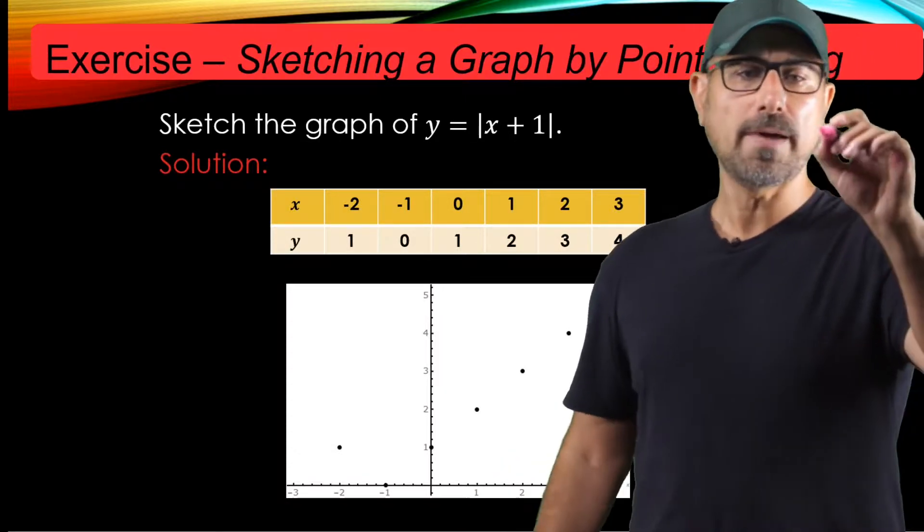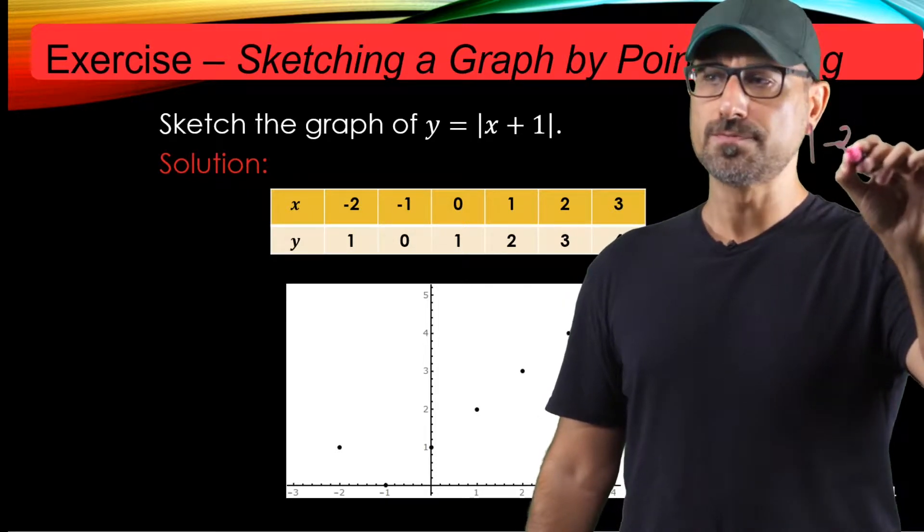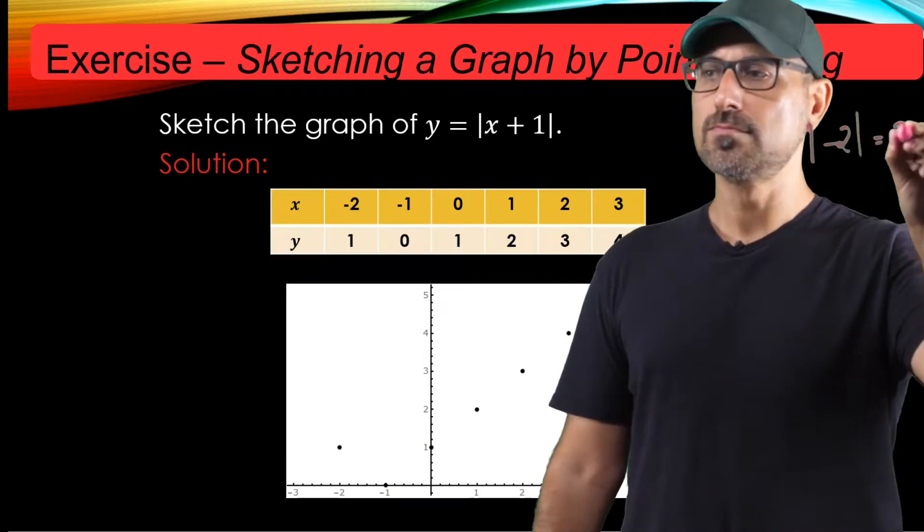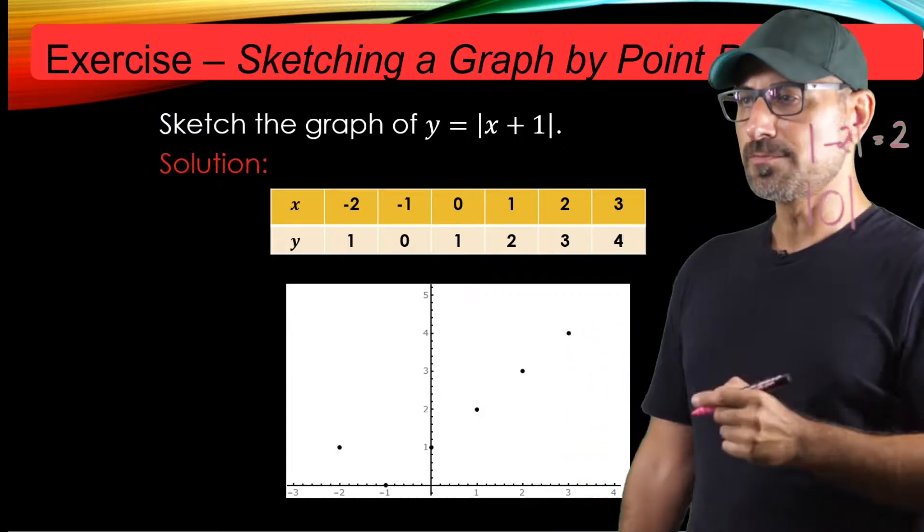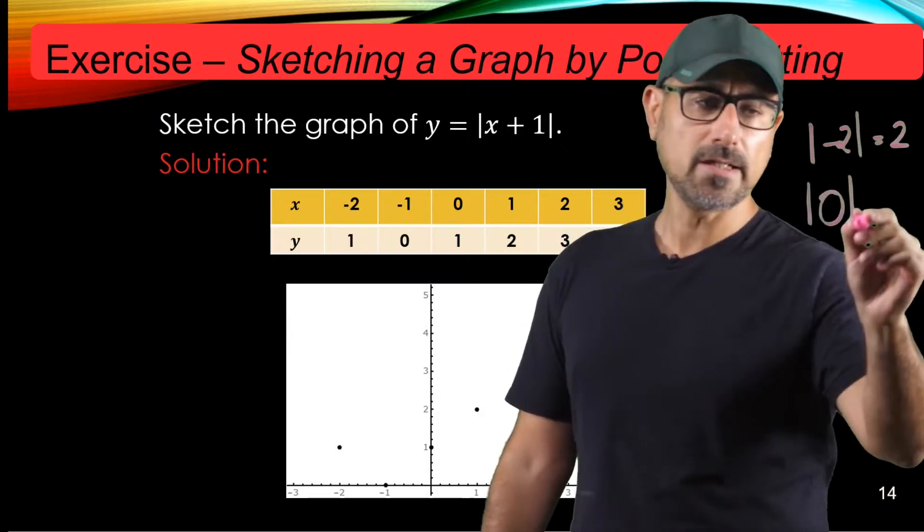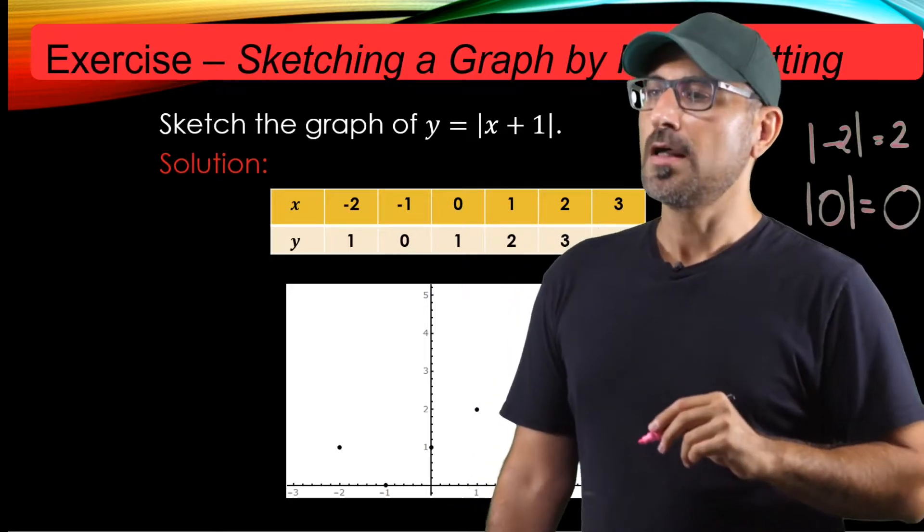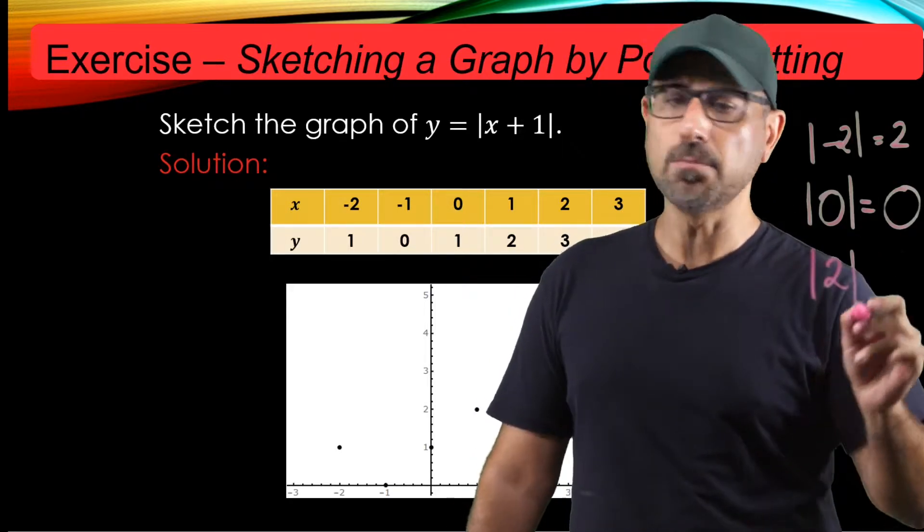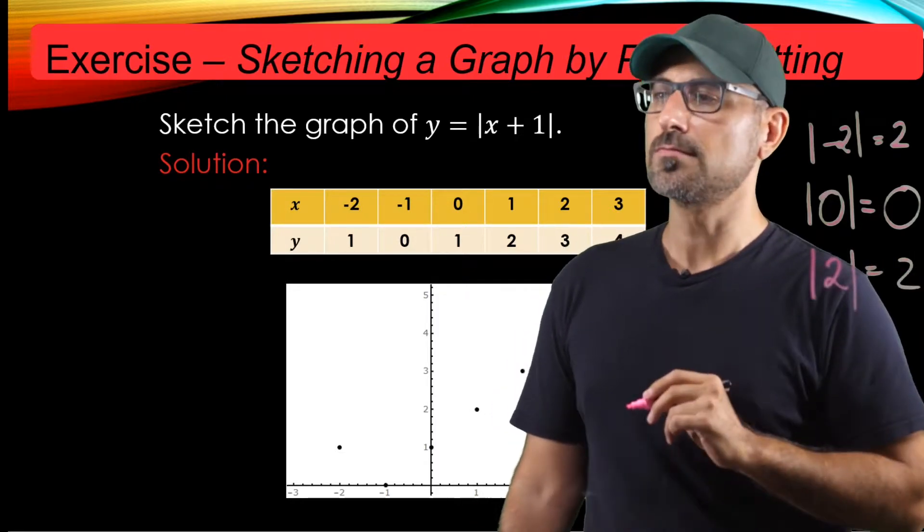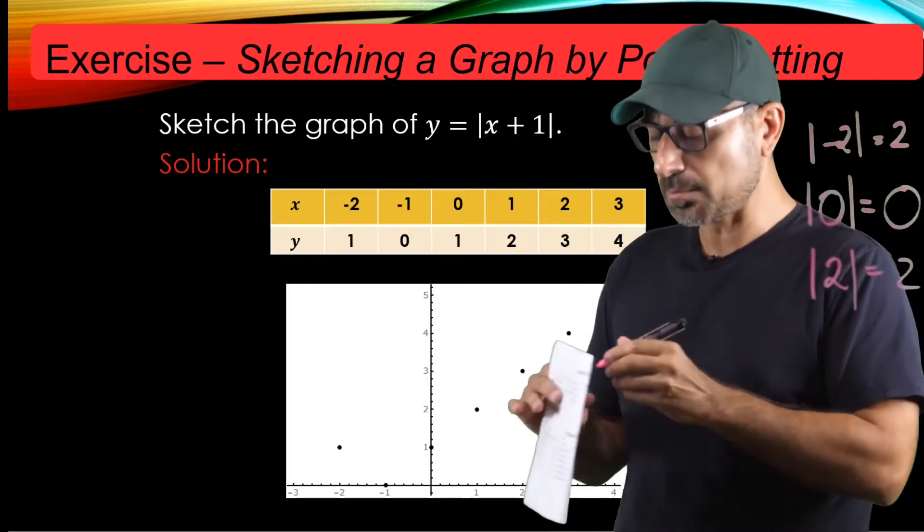For example, absolute value of negative 2 is just 2. Absolute value of 0 is 0, since 0 doesn't have any sign. And if you take the absolute value of a positive number, it's just the number itself. So eventually, you always get positive numbers in the output.